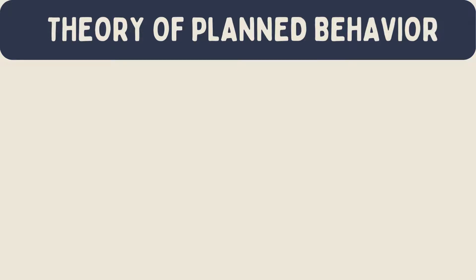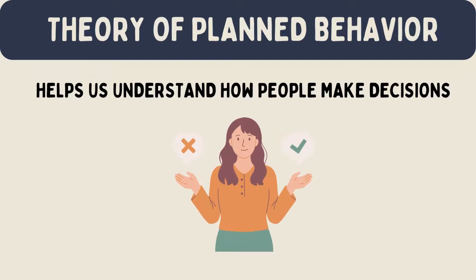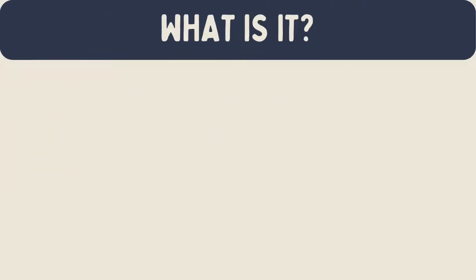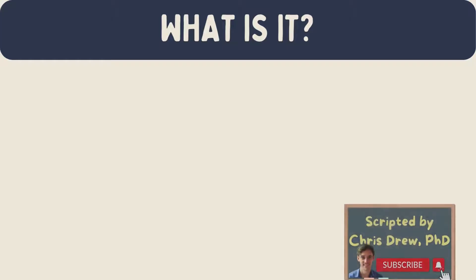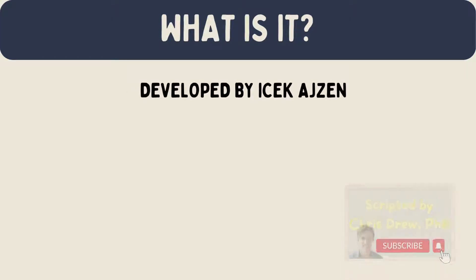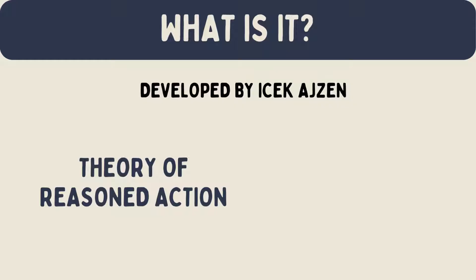The Theory of Planned Behavior helps us understand how people make decisions and explains why people behave in certain ways. The Theory of Planned Behavior was developed by Icek Ajzen. It builds on an earlier theory called the Theory of Reasoned Action.